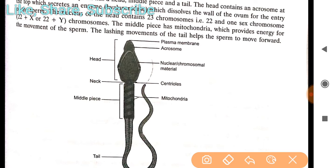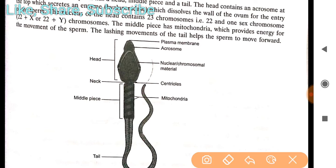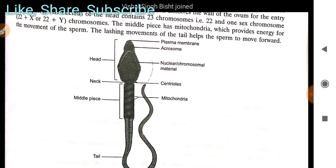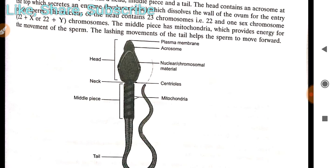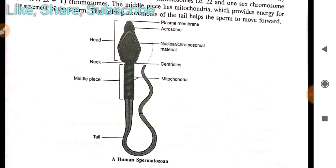The middle piece of the sperm has mitochondria, which provides energy for the movement of the sperm. The main function of mitochondria here is to provide energy for sperm movement. The tail helps the sperm move forward — the lashing movement of the tail helps the sperm move in the forward direction.